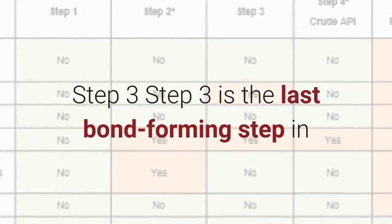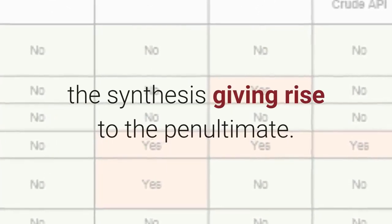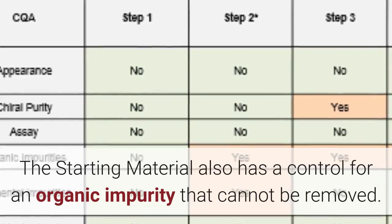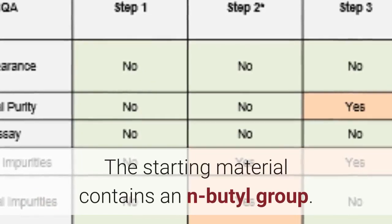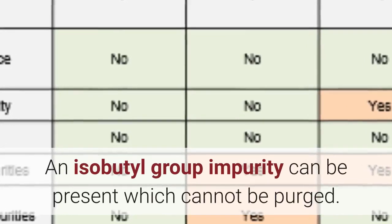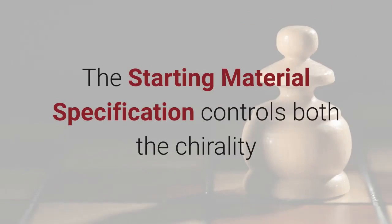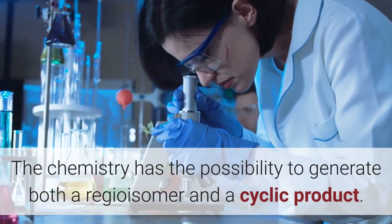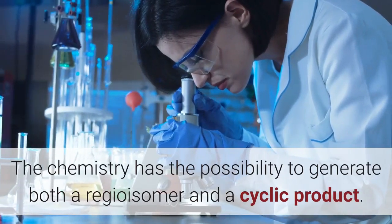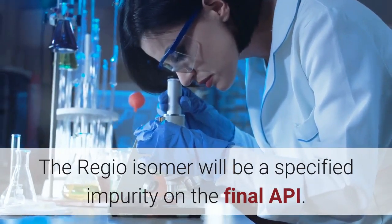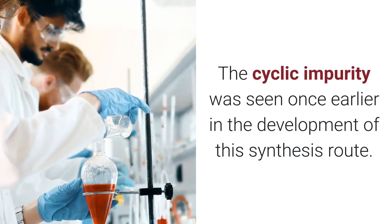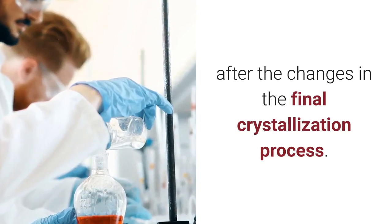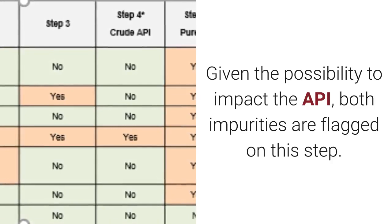Step 3 is the last bond-forming step in the synthesis, giving rise to the penultimate intermediate. It introduces a chiral center coming from the starting material. The starting material also has a control for an organic impurity that cannot be removed — the starting material contains an N-butyl group, and an isobutyl group impurity can be present which cannot be purged. The starting material specification controls both the chirality and the isobutyl impurity. The chemistry has the possibility to generate both a regioisomer and a cyclic product. The regioisomer will be a specified impurity on the final API. The cyclic impurity was seen once earlier in development but has subsequently been below the detection limit after changes in the final crystallization process. Given the possibility to impact the API, both impurities are flagged on this step.